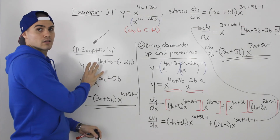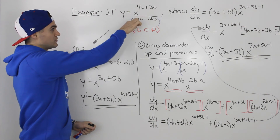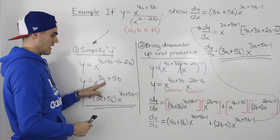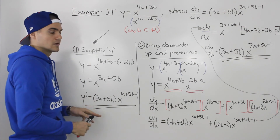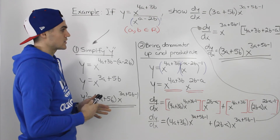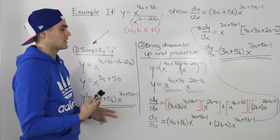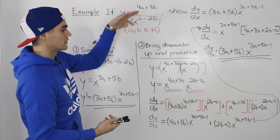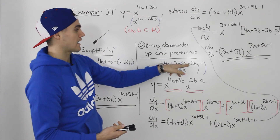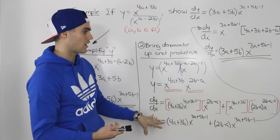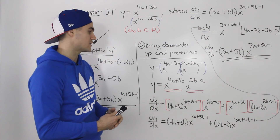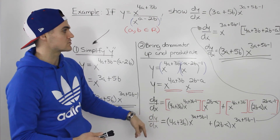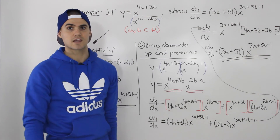So two different ways. The first way is a lot easier — just simplify y since the exponents have the same base, then apply the power rule to get the derivative quickly. But if your teacher says you can't simplify the original function, then you take the expression in the denominator, bring it up, make it a power of negative one, and apply the product rule. When you do all that algebra, you end up with the same derivative.